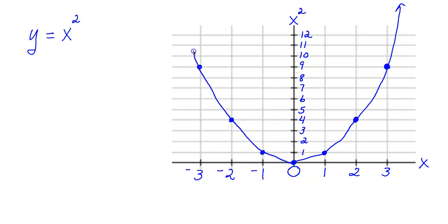This is the graph of the equation y equals x squared in blue. This is called our parent function, our original function. Now what I want to do is move this graph, or translate it, up 3 units.